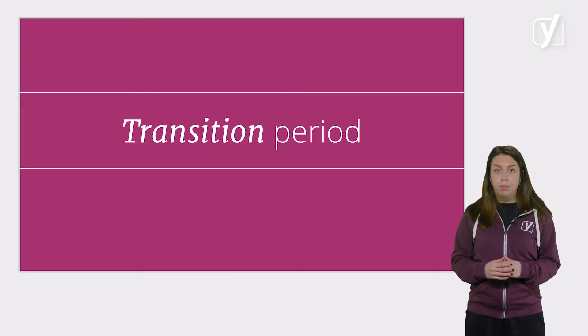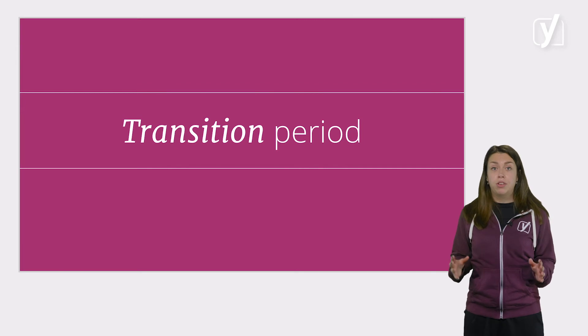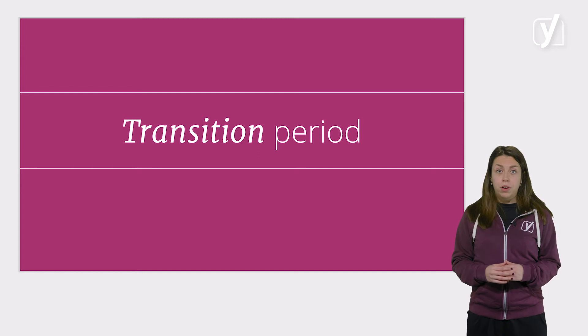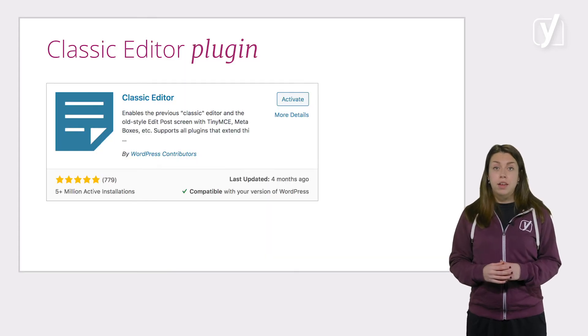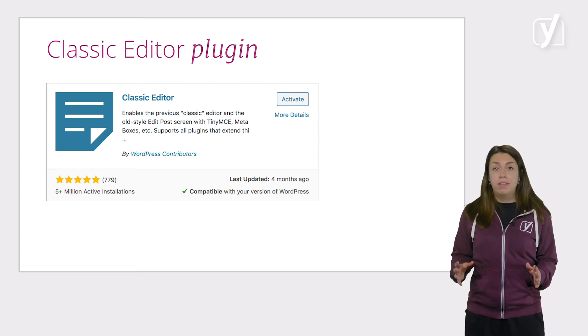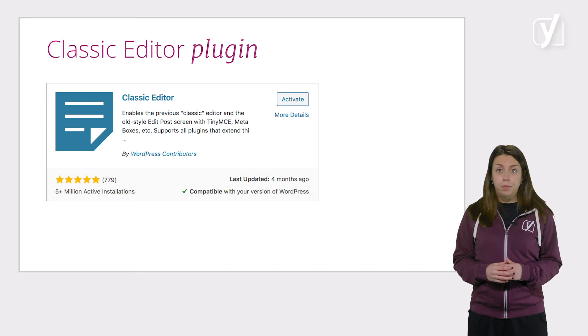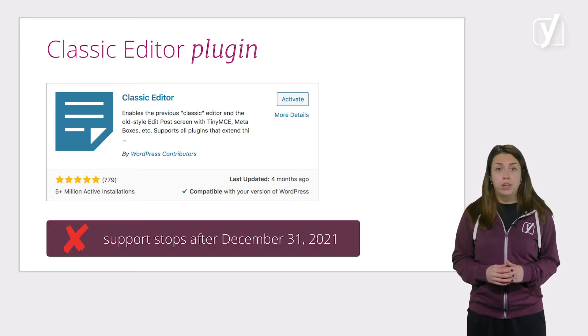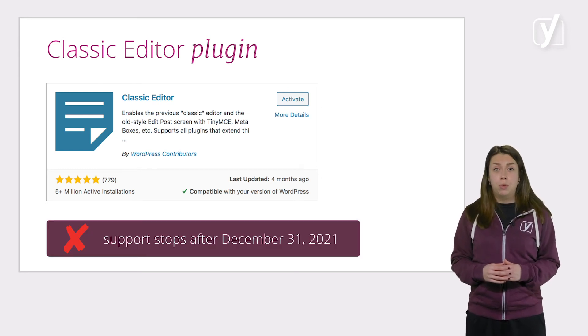The Gutenberg project is literally where all the innovation in the WordPress space is happening. It's a fundamental shift for WordPress. Because of this, there is a transition period as everyone adjusts to building sites using these new tools. For those who are still finding it hard to switch to the block editor, there is the Classic Editor plugin, which provides a way to keep using the Classic Editor instead of the Block Editor, and it will be maintained during this transition period. However, this plugin won't be supported forever — the WordPress.org team has announced they will officially stop supporting the Classic Editor plugin after December 31, 2021.